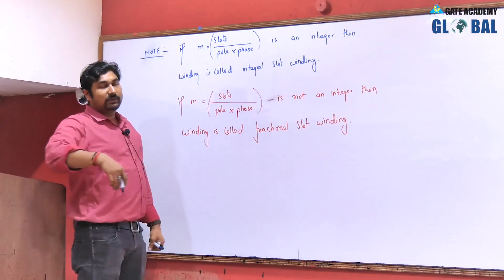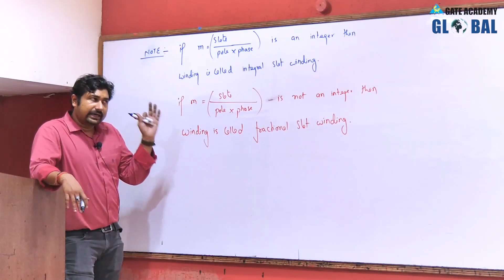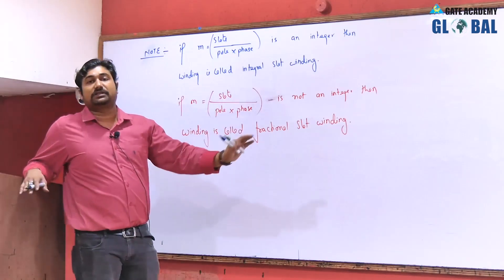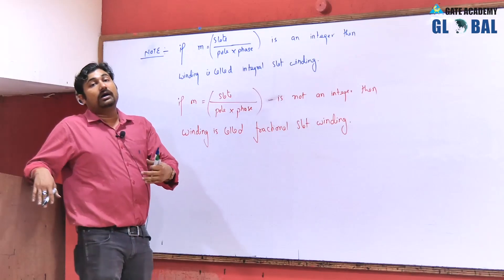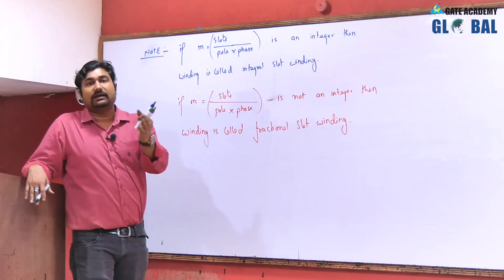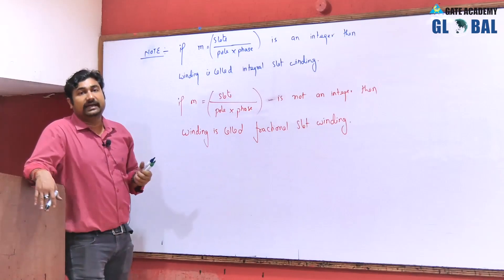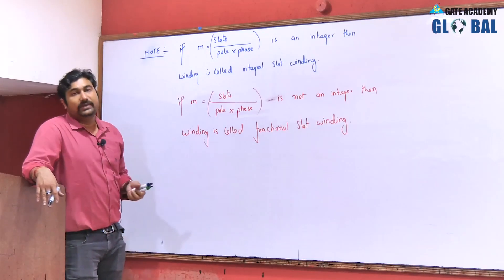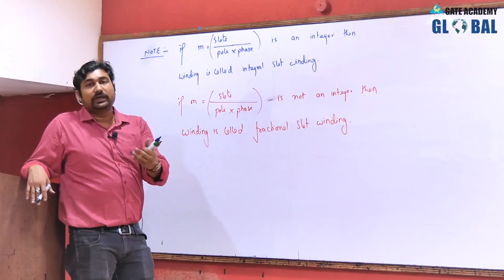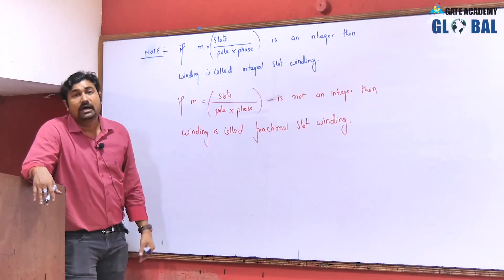Instead of going through the entire explanation, I am just taking the formula. If you read from any book, you can easily understand the entire concept of fractional slot winding. My advice is to go with a reference textbook like P.S. Bh­imra and observe the armature windings described in the last section. That is very effective and useful for knowledge, though not as critical from an examination point of view.